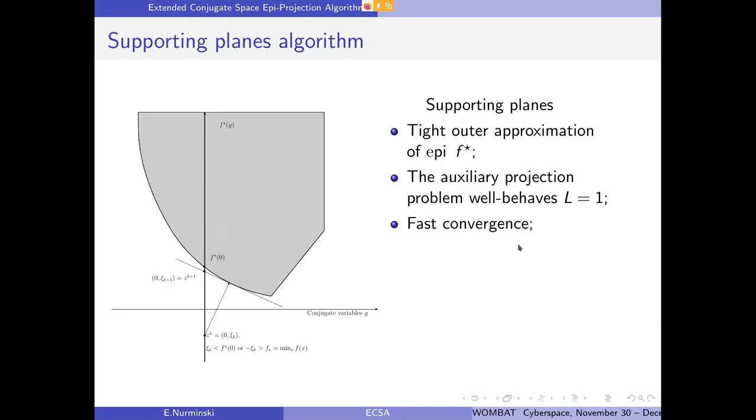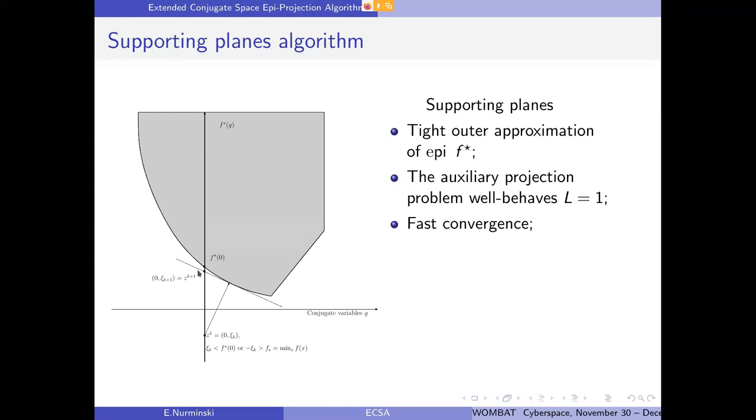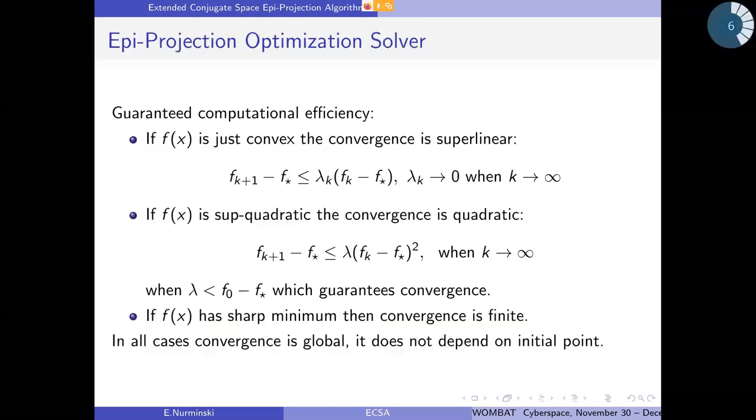The Lipschitz constant is equal to one, the projection operator is non-expansive. So we can use it in certain cases just for simple iteration methods. And as you can guess from this picture, you might have rather fast convergence, because you see that our next approximation is quite close to the root. And indeed, if we look at some theory of this algorithm, it has quite interesting convergence properties.